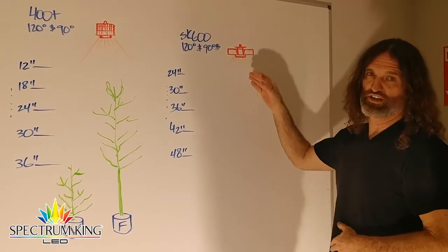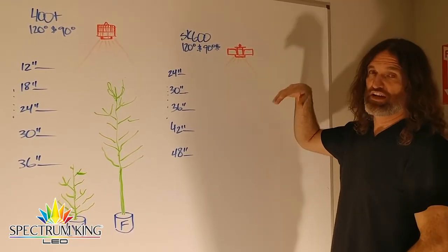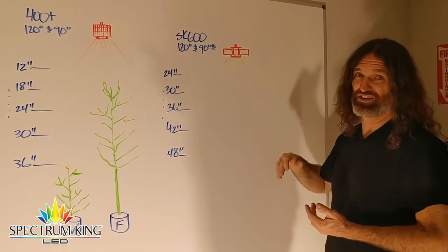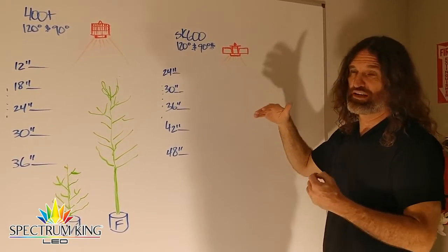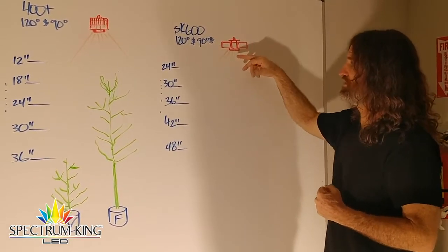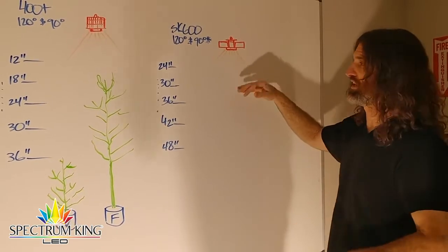It is super bright, super intense. Most PAR meters only measure up to 3000 because the sun usually only gets up to 2000 or so, even at the equator. This pegged the meter at 3000 at one foot, so we won't even deal with that because that's too intense for plants.